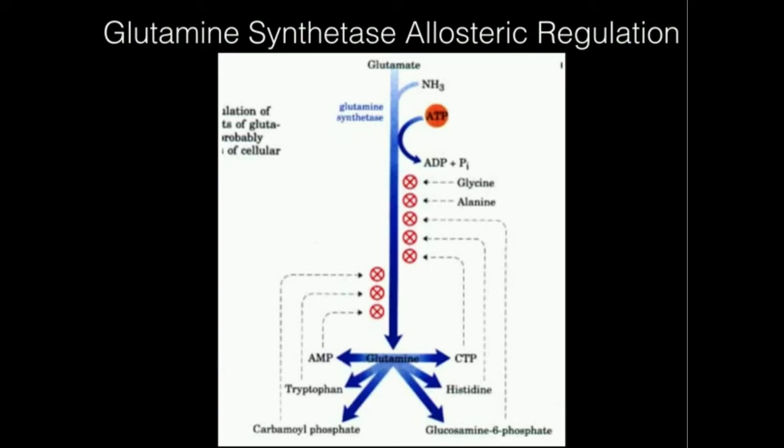The other reason it's important to turn glutamine synthetase off is to notice what glutamine synthetase is consuming: it's consuming ammonia. So if we had tons of this enzyme active all the time, we'd be lowering the ammonia to dangerous levels. Ammonia is toxic — mutations in some enzymes that consume ammonia can lead to mental retardation at a very young age. It's very toxic and can even kill you in high concentrations.